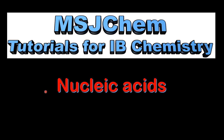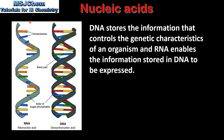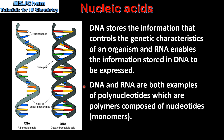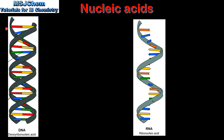This is MSJChem. In this video I'll be looking at nucleic acids. The two types of nucleic acids that we'll be looking at are RNA on the left and DNA on the right. DNA stores the information that controls the genetic characteristics of an organism and RNA enables the information stored in DNA to be expressed. DNA and RNA are both examples of polynucleotides, which are polymers composed of nucleotides. The nucleotides are the monomers. So we'll start by looking at the structures of DNA and RNA.